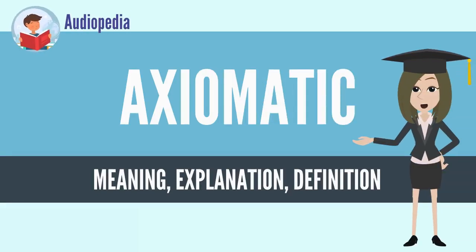In mathematics, an axiomatic system is any set of axioms from which some or all axioms can be used in conjunction to logically derive theorems. The theory consists of an axiomatic system and all its derived theorems.